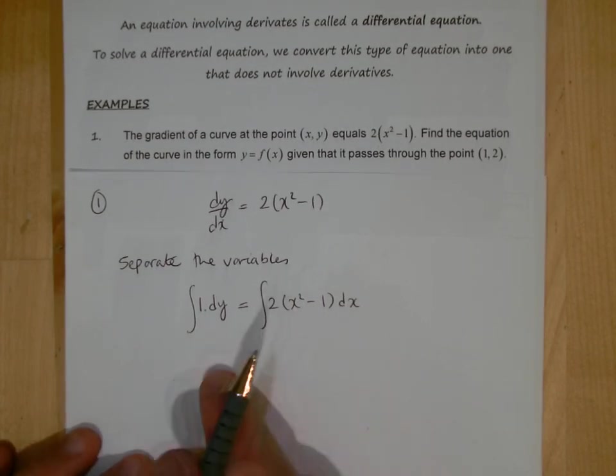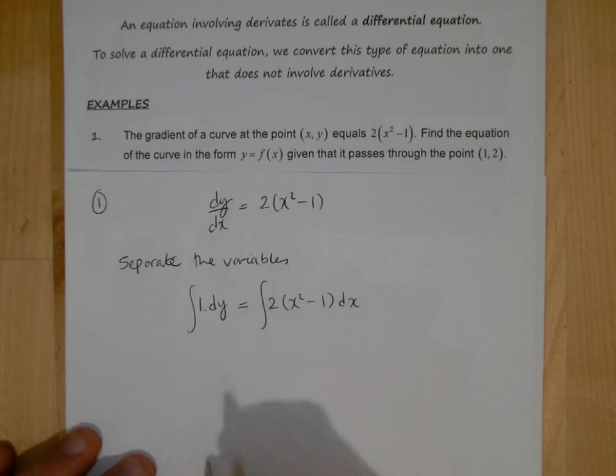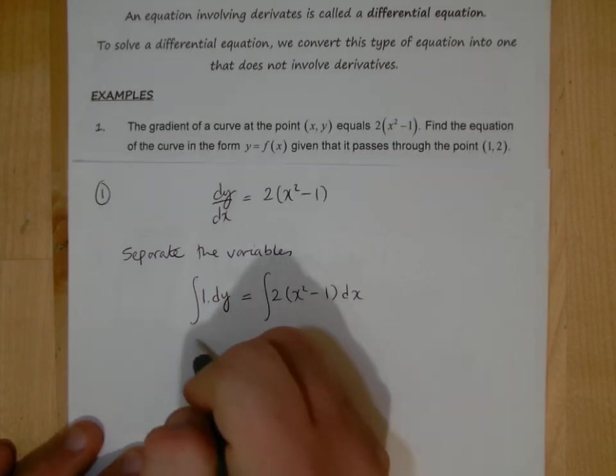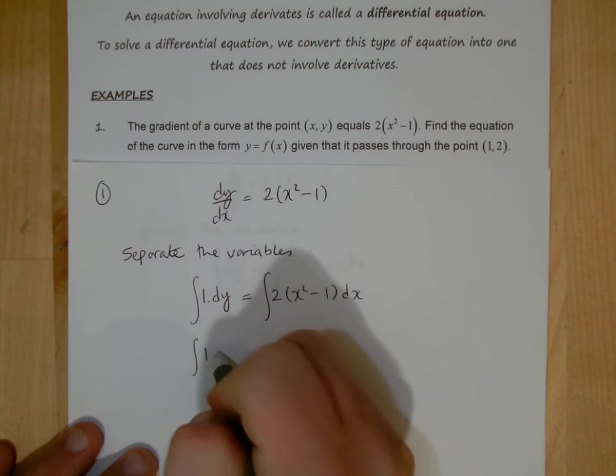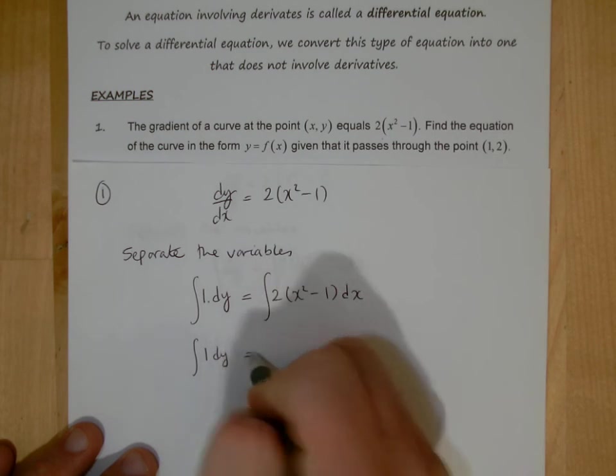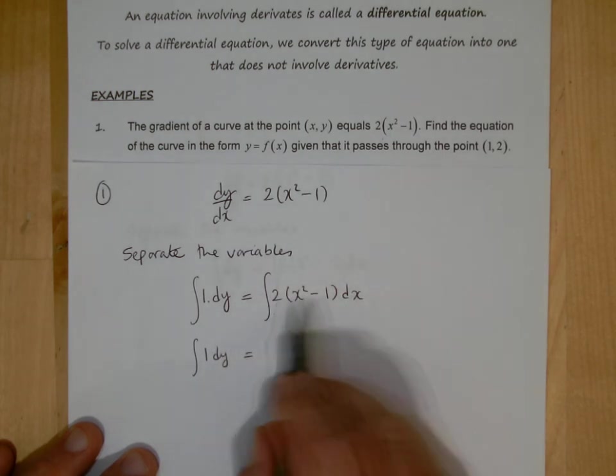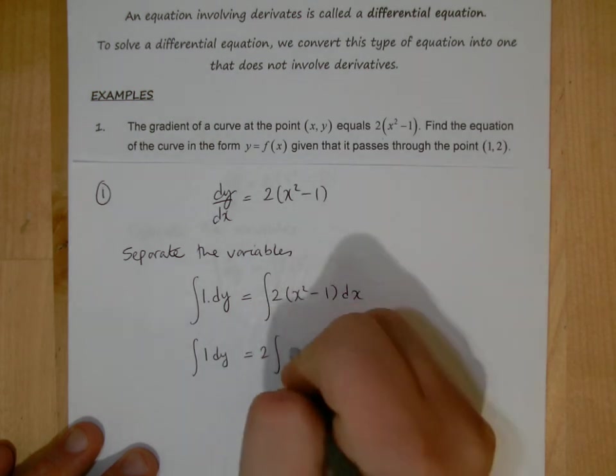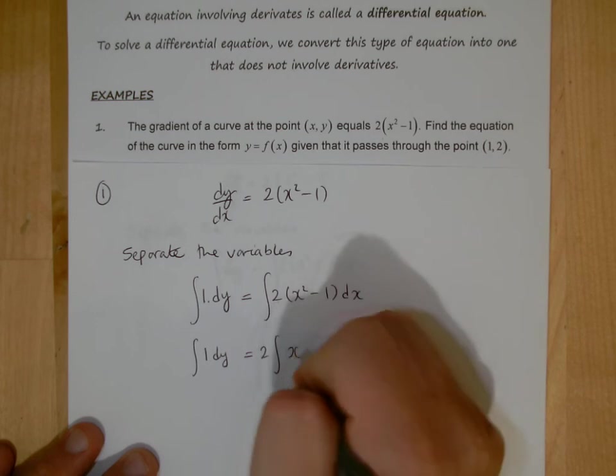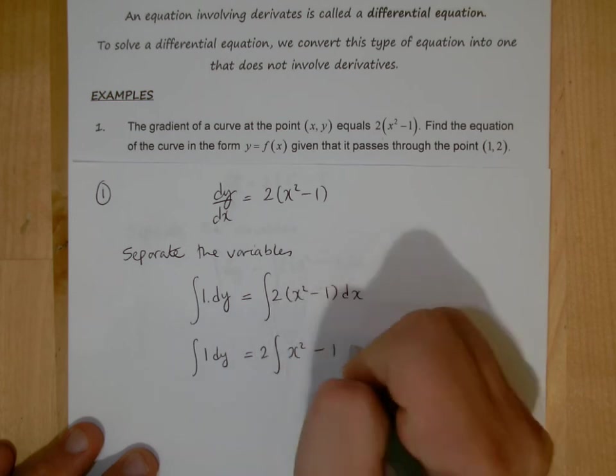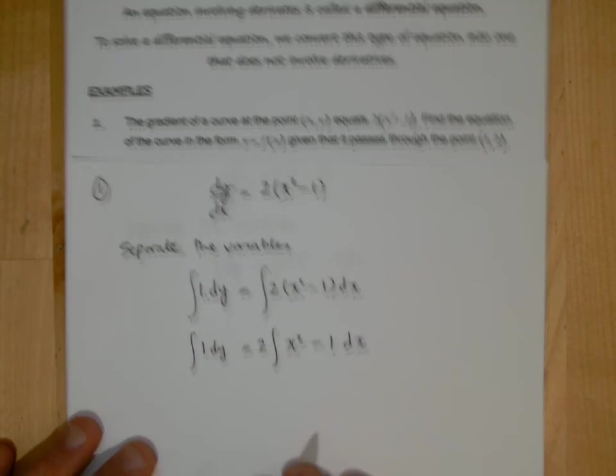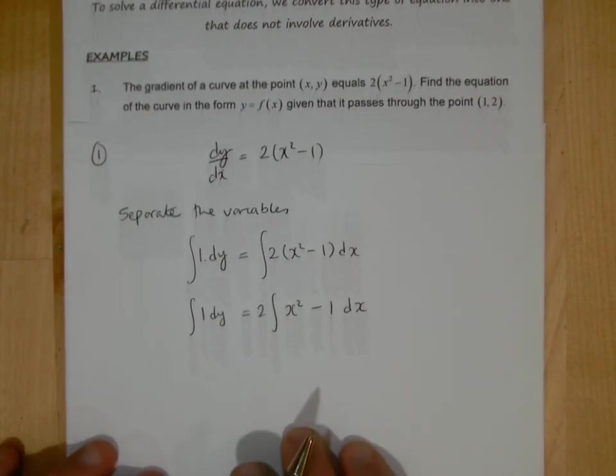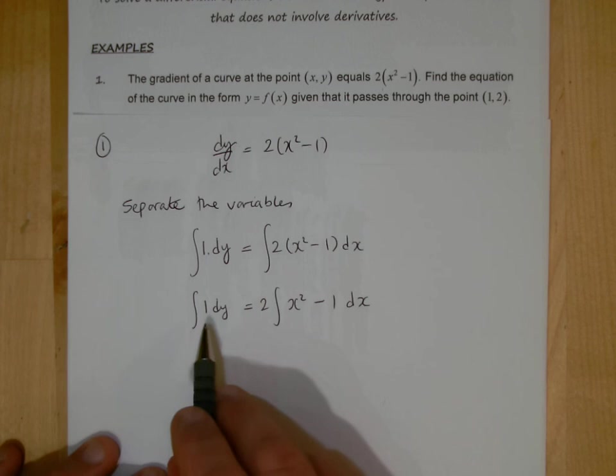And we've got to integrate both sides then. Now what you might find easier when it comes to integrating, and especially in this case here, because we've got this bracket multiplied by the constant 2, we can take the constant outside of the integral, we're allowed to do that, and we're left down with x² - 1 inside that integral. So then we're going to integrate it, and we integrate both sides.